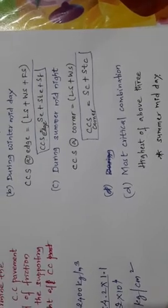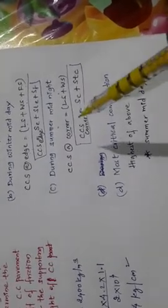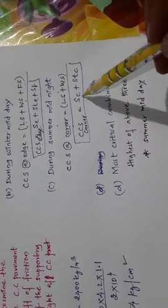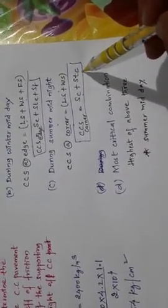During winter midday, tensile stress develops at the bottom of the slab due to warping at both the interior and edge. Load stresses also cause tensile stress at the bottom at the edge. During winter, frictional stress is tensile due to contraction of the slab, so the critical combination at the edge is: load stress + warping stress + friction stress. During summer midnight, the critical combination occurs at the corner — on top — when the slab tends to warp upwards and is resisted by self-weight, with no frictional stress. That combination is: load stress at corner + warping stress at corner.